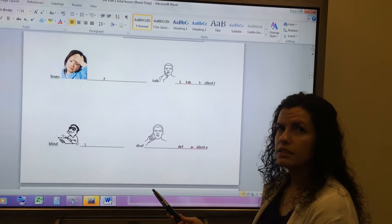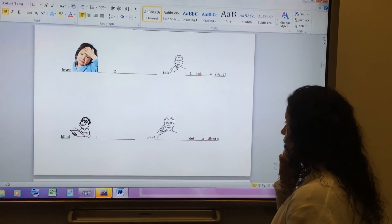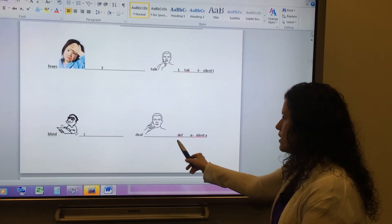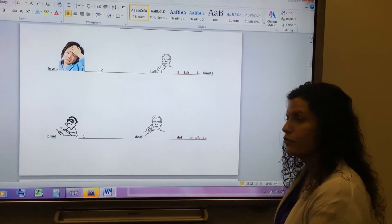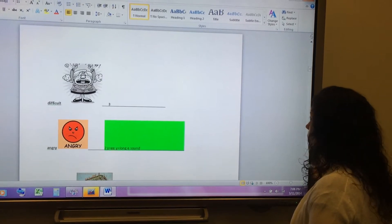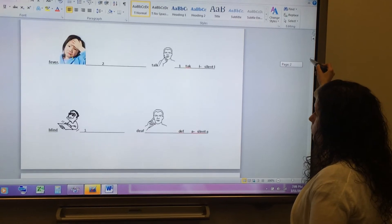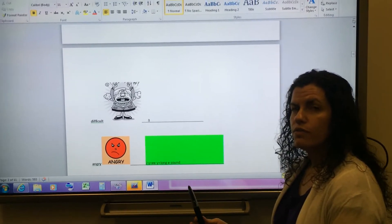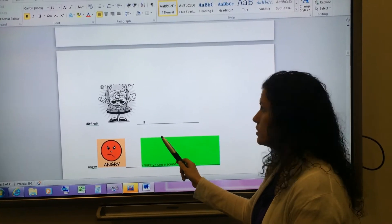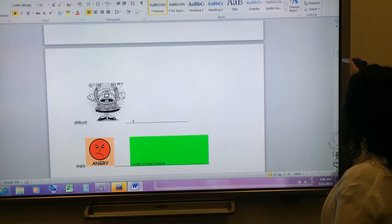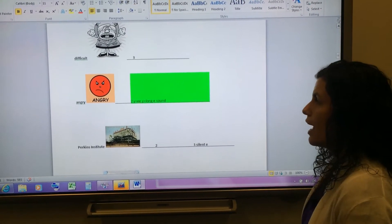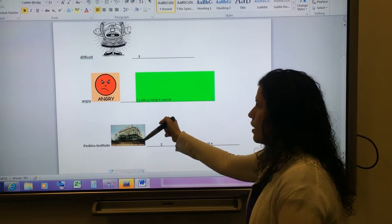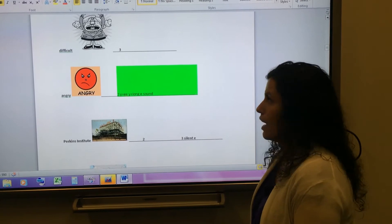Next is the word blind. The long I, blind, one syllable. Next, deaf. The A is silent. So you can cross it off. Write silent A or phonetic spelling. D-E-F. The short E. Deaf. Here is the word difficult. Three vowels. They each make a sound. Difficult. So I put the number three there for three syllables. Here is the word angry. Angry. Two sounds. Two vowels. Two syllables. Now, the Y on the end makes a long E sound. Angry.